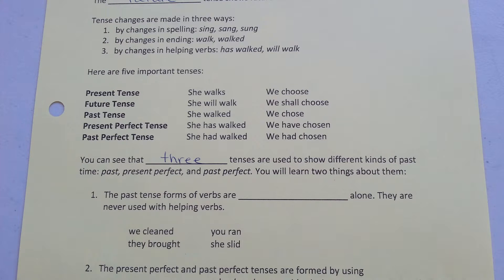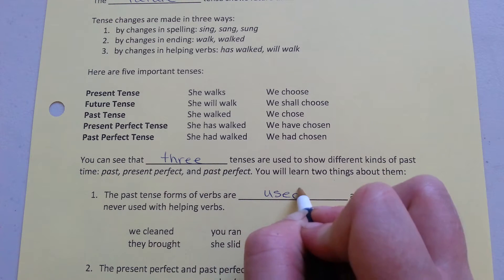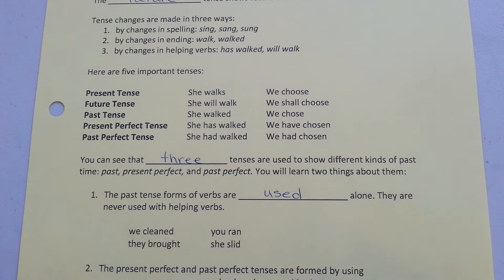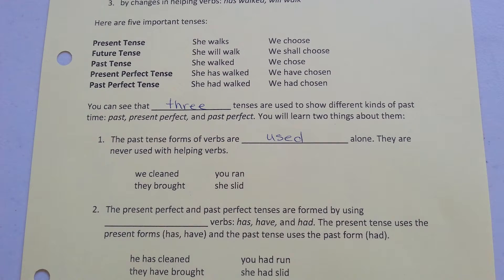You will learn two things about them. First, the past tense form of verbs are used alone. They are never used with helping verbs. So if you have a verb in the past tense and there are no helping verbs, you know it's the past and not one of the perfect tenses. So: we cleaned, they brought, you ran, she slid.